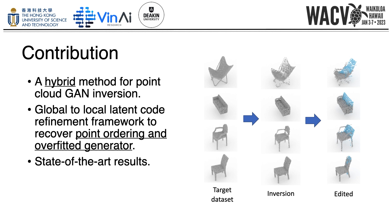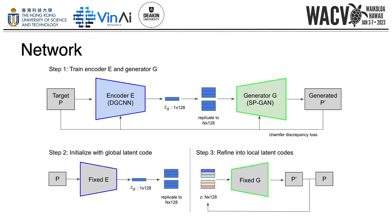Our method can produce better reconstruction results compared with existing methods. Our architecture consists of three steps. First, the encoder E based on DGCNN maps the target point cloud to the global latent space of the pre-trained GAN. In the second step, we initialize the input latent code with the global latent code. Finally, the initial latent code extracted by encoder E is optimized with a local latent code corresponding to its point. By dividing it into global and local, it is possible to solve the point ordering problem and maintain the dense correspondence provided by SBGAN.